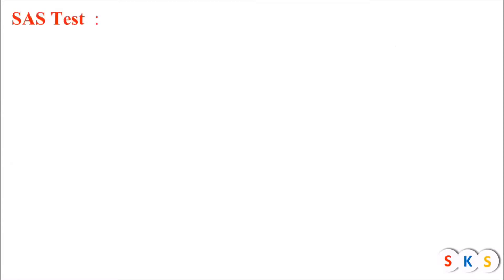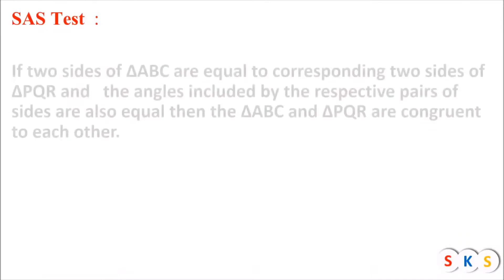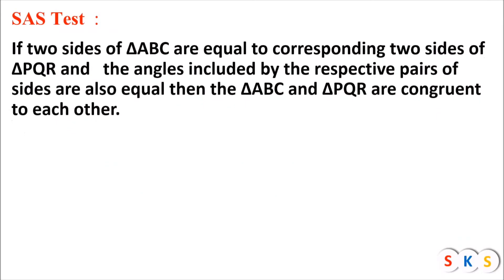SAS Test, i.e., Side Angle Side Test. If two sides of triangle ABC are equal to the corresponding two sides of triangle PQR, and the angles included by the respective pairs of sides are also equal, then triangle ABC and triangle PQR are congruent to each other.